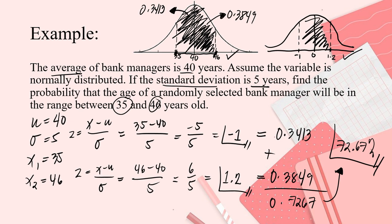So, that's the probability. We have 72.67% probability that the age of a randomly selected bank manager will be in the range between 35 and 46 years. Next!